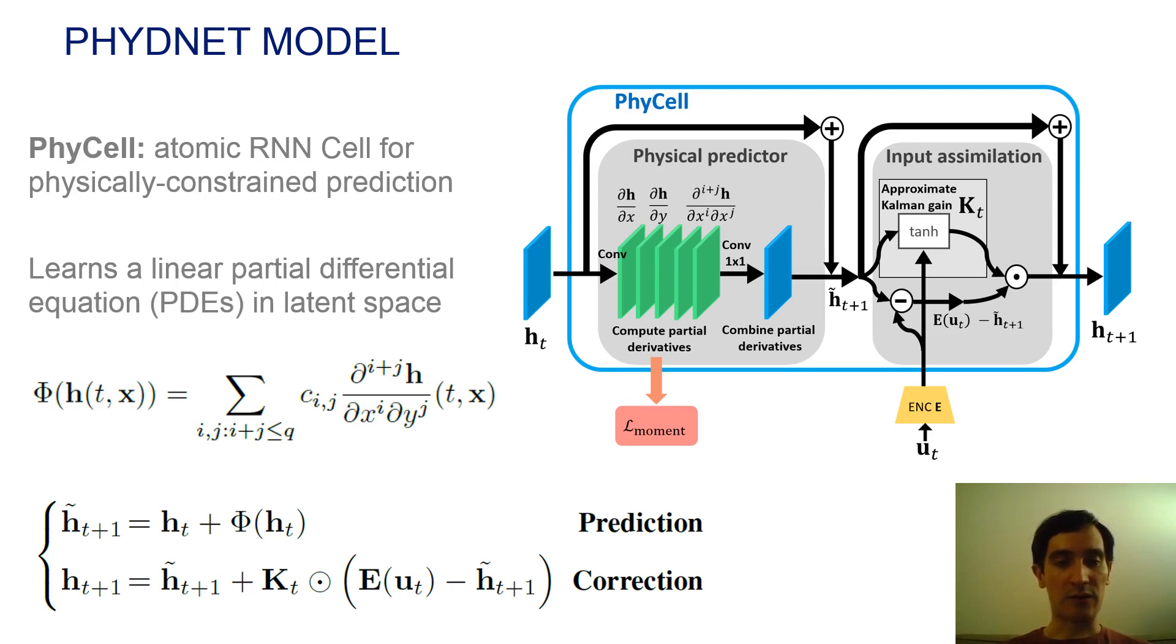PhyCell follows a two-step scheme. First, an early physical prediction step in latent space, and second, a correction step with input images. This scheme can be seen as a kind of data assimilation technique.